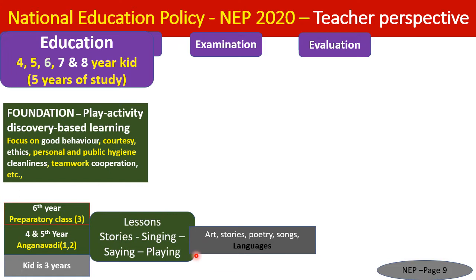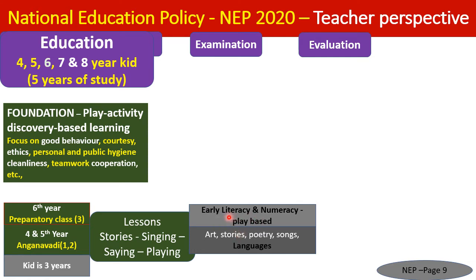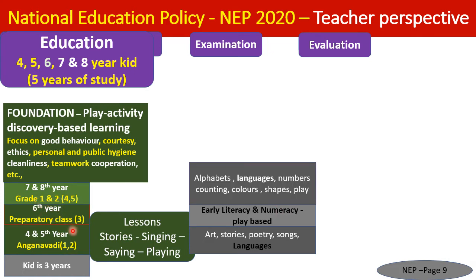A three-language formula will be adopted across the country. After the first two years in the preparatory class, literacy and numeracy are introduced. Alphabets and numbers must be taught through play and songs — not by rote mathematics. For Grades 1 and 2, alphabets, numbers, simple counting, addition, subtraction, colors, and shapes are taught through play and storytelling.